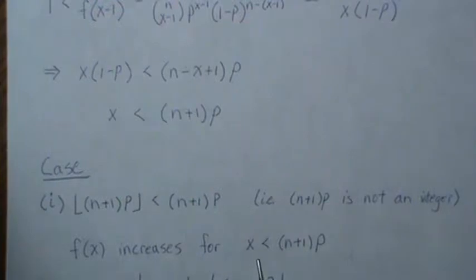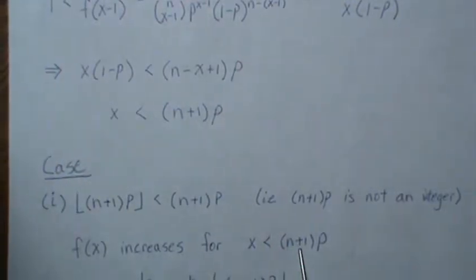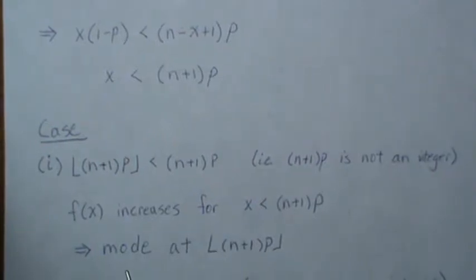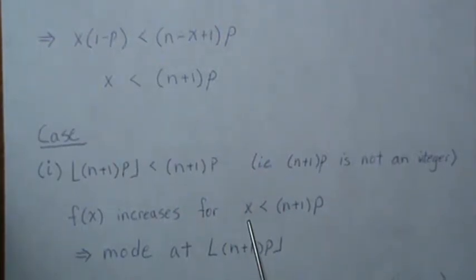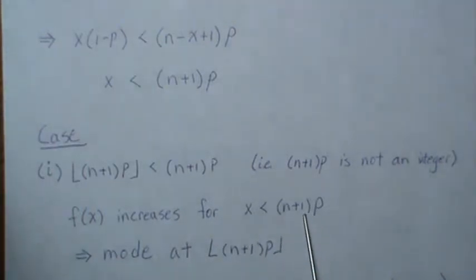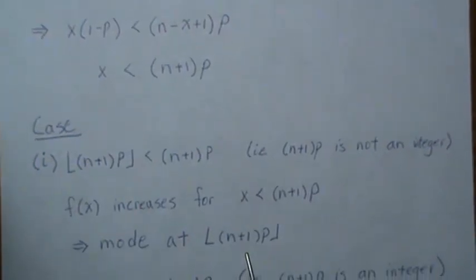Then f(x) increases for all x less than that. And then once it becomes greater than this, then it decreases. So the mode is actually at the floor of this number. Since x can only take on integer values, and let's say if this is 10.3, it increases up to 10.3, and then it goes down. But that means it increases to 10, and then 11 goes past that, and then it goes back down.